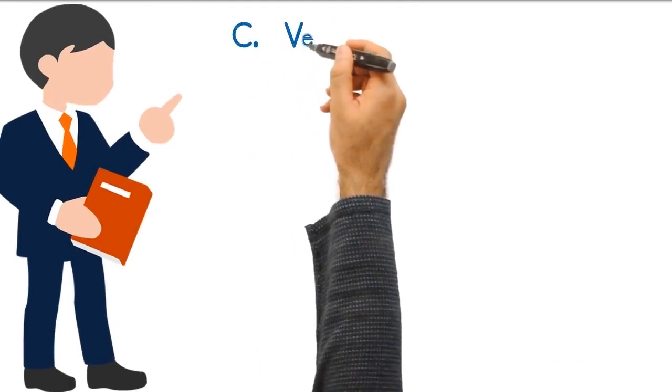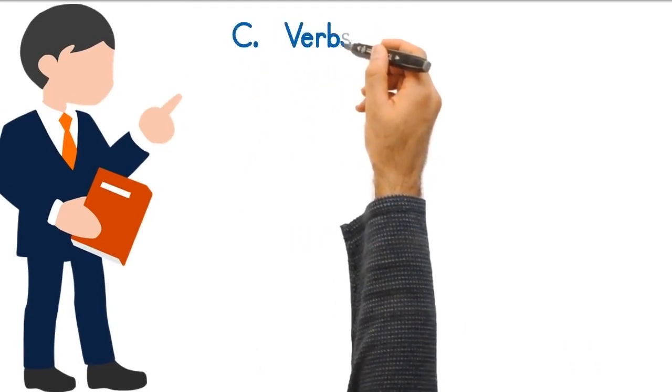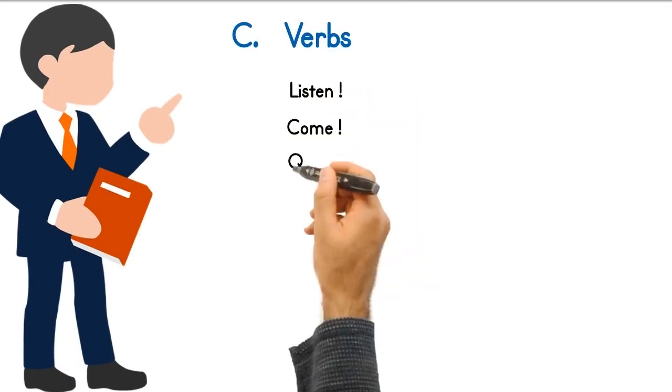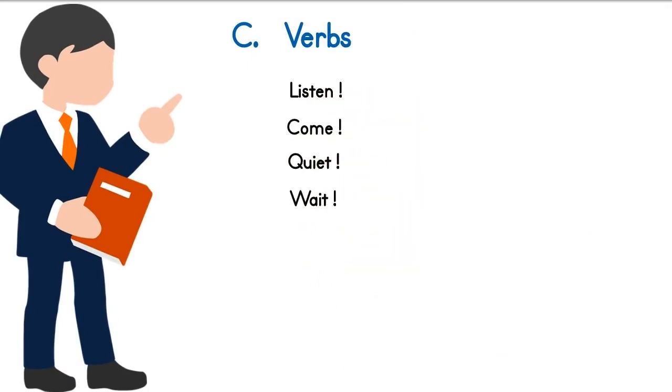C. The following are examples of verbs used as interjections: Listen, Come, Quiet, Wait, Stop, Run, Look, Go.